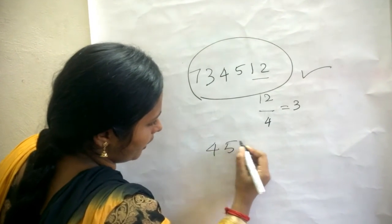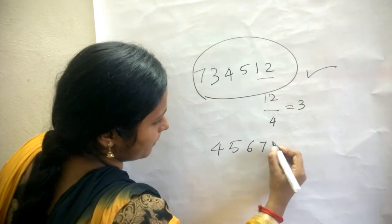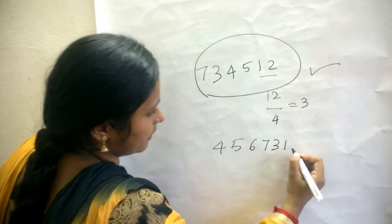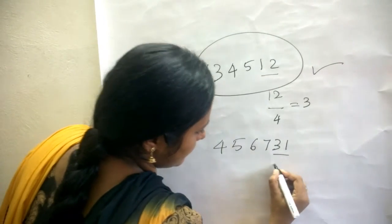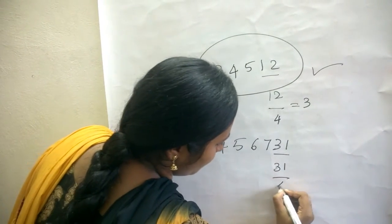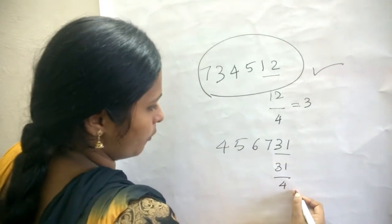456731. Take this last 2 digits and divide it by 4, which is not divided by 4.